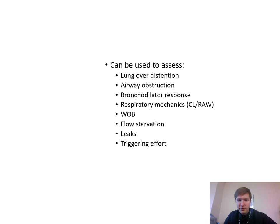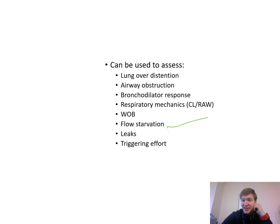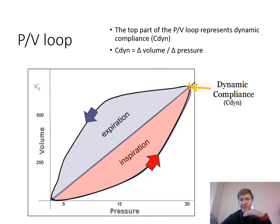The bottom of the PV loop is usually at the set PEEP level. If an imaginary line is drawn down the middle, the area to the right represents inspiratory resistance and the area to the left represents expiratory resistance. If hysteresis is mostly on the expiratory side, it could be a blocked HME, gunked-up expiratory filter, or water in the expiratory circuit. If it's on the inspiratory side, check for tube biting, secretions in the tube, or bronchospasm.